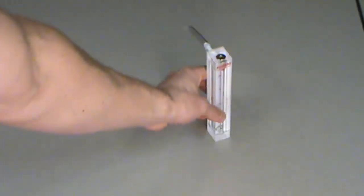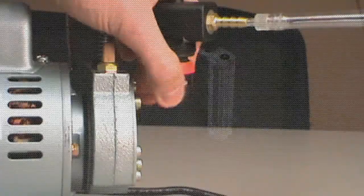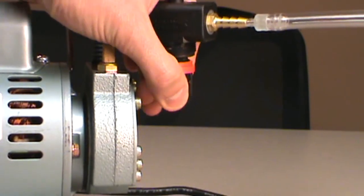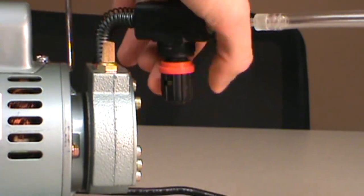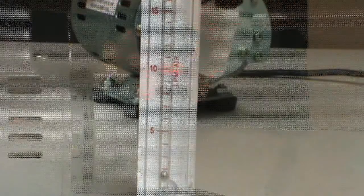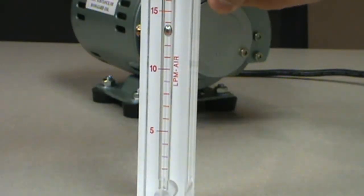You'll also need a flow meter to calibrate your vacuum pump. Turning counterclockwise increases the amount of air you pull, and clockwise decreases it. These mold cartridges perform optimally at 15 liters per minute.